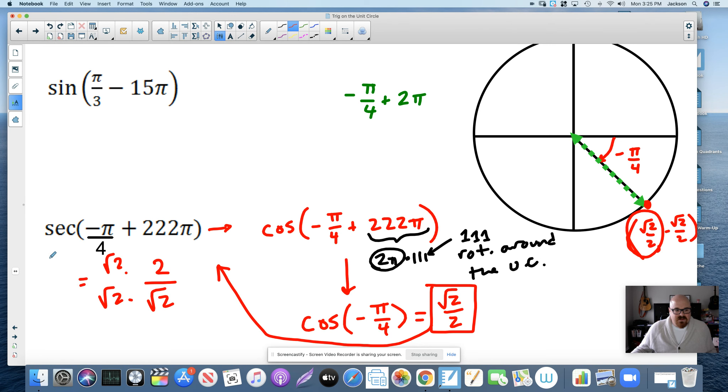We're going to have to get used to doing this quite a bit. 2 radical 2 over 2, those cancel. So the answer to this question, the secant of negative pi over 4 plus 222 pi is radical 2. It's the cosine of that angle flipped over.